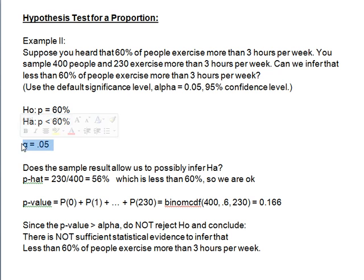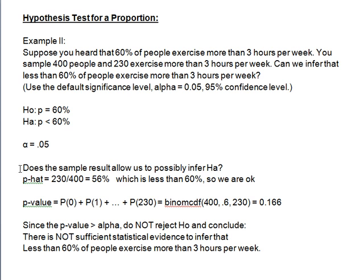Alpha is equal to 0.05, and again, the alternative is what we could possibly infer. First we have to check if our sample results allow us to possibly infer it. We have p-hat = 230 out of 400, which is 56%, which is less than 60%, so we could possibly infer it. If it were something like 72%, we couldn't possibly infer it was less than 60% and would stop there. Since this is less than 60%, we're okay.